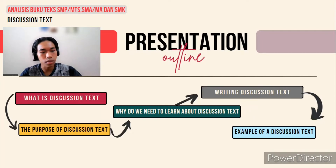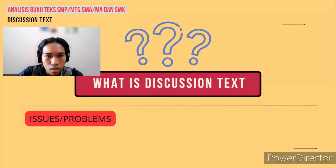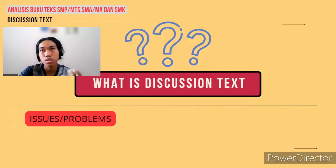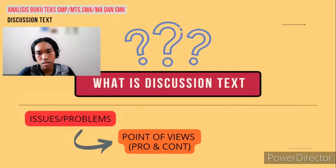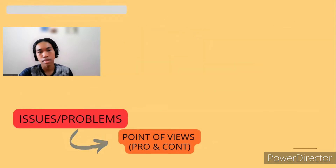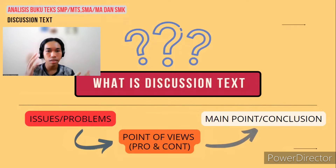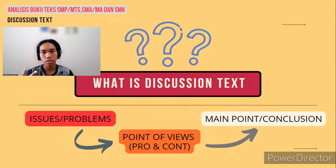Now let's jump to the first one: what is actually discussion text? Discussion text is a text which presents a problematic discourse or an issue, and this problem will be discussed from various different points of view. Each point of view presents pro and contra opinions on a certain issue in order to discover the main point of the issue or problem. In short, discussion text is a text that defines the main point between two different ideas — the pro and the con.